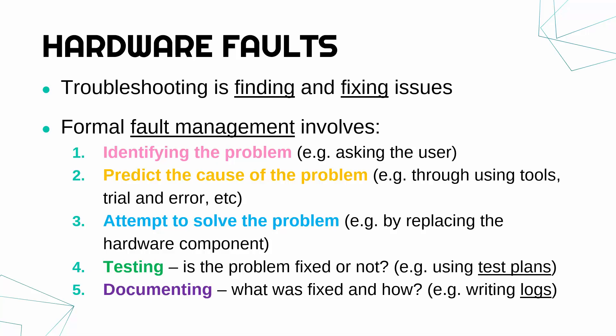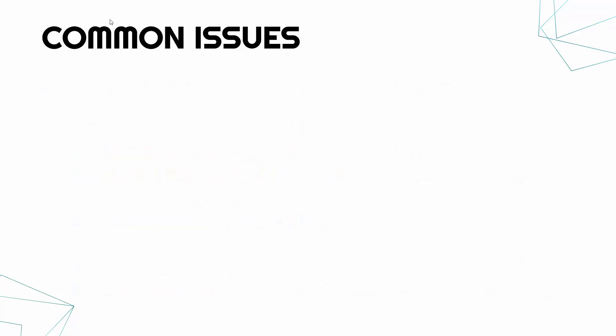If the test didn't work and the problem wasn't fixed, it would be your job to go back to step two, predict another cause, and find a different way to try and solve it. Often this will take a few loops because it can be hard to fix issues straight away. So those five steps are more or less what you need to go through. Now to slightly summarise that process with some common issues you might come across and some examples of tools.